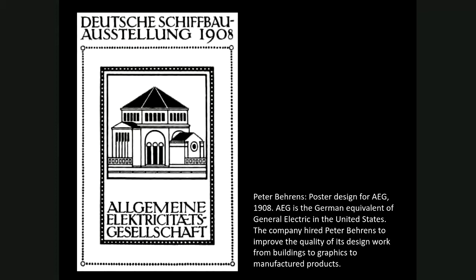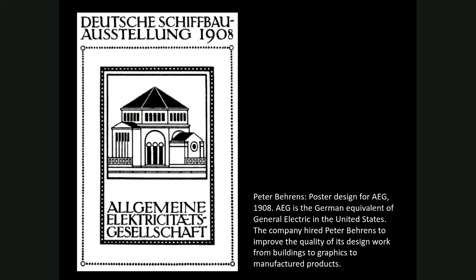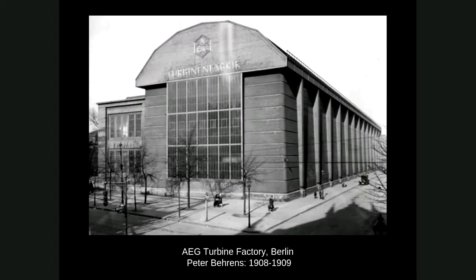One of Behrens' major clients was the AEG company. Here is a poster he designed for them in 1908 — still before World War I, still in a more arts-and-crafts type mode. The AEG was the German equivalent of General Electric — the big power company generating power, making light bulbs, with a monopoly similar to how Bell Telephone had a monopoly well into the 1980s. This was a major client to have, with projects all over.